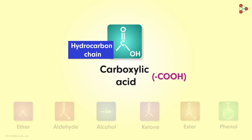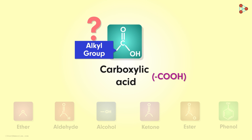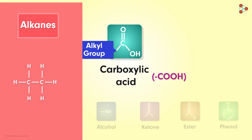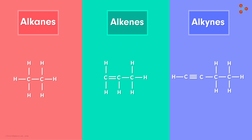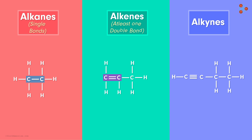Where do you think will this group be attached? It can be attached to an alkyl group. What do we mean by an alkyl group? We have seen what alkanes, alkenes and alkynes are. Single bonds — alkanes. At least one double bond — alkenes. And at least one triple bond — alkynes.